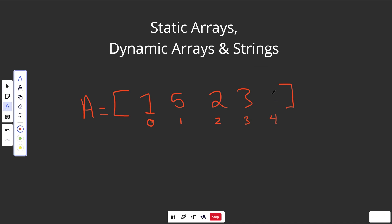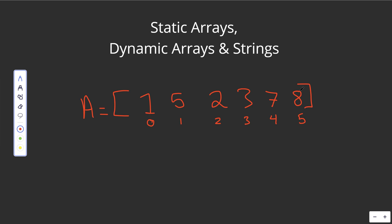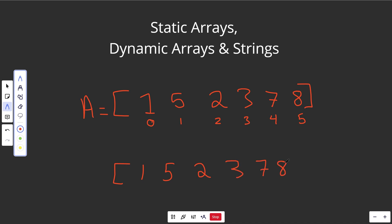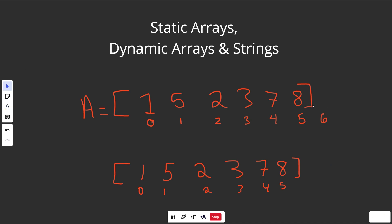With a dynamic array you can append — inserting at the end of the array — and change its length, making it increase. You can just add an element and that's fine. But how this is actually implemented under the hood is via a static array. So under the hood you'd have a static array with fixed size, say containing one, five, two, three, seven, and eight, with a length of six.